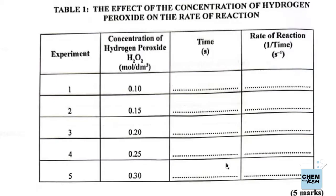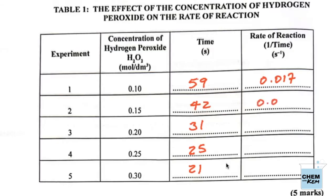The times are: Experiment 1 = 59 s, Experiment 2 = 42 s, Experiment 3 = 31 s, Experiment 4 = 25 s, Experiment 5 = 21 s. Taking the inverse: 1/59 = 0.017, 1/42 = 0.024, 1/31 = 0.032, 1/25 = 0.040, and 1/21 = 0.048. All to three decimal places.